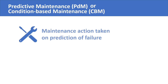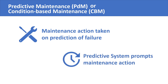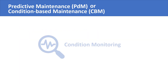Predictive maintenance is given that name because it is the type of maintenance in which the maintenance actions are taken based on prediction of failure. The maintenance technician performs maintenance when he receives information from a predictive system that a machine is about to experience a problem. It is also called condition-based maintenance because the most common way predictions work is by a method known as condition monitoring.